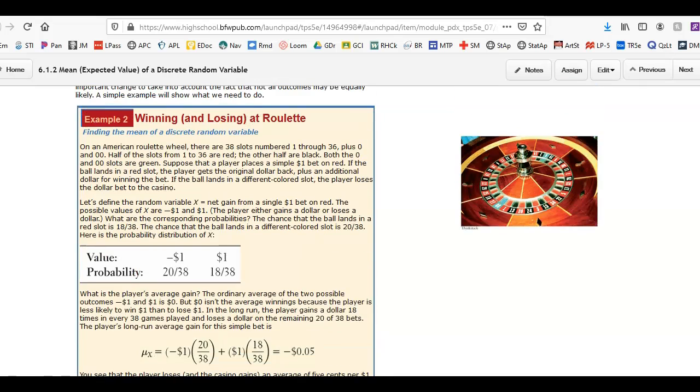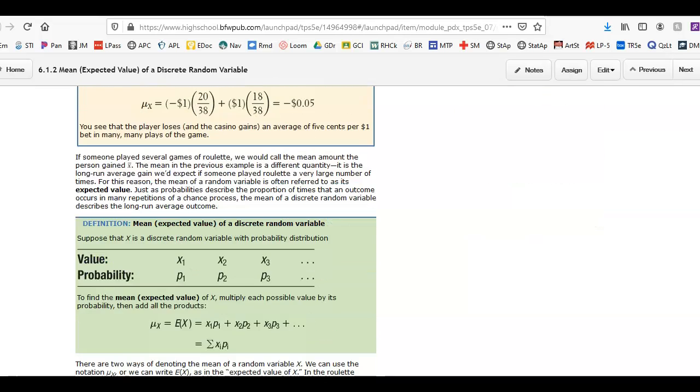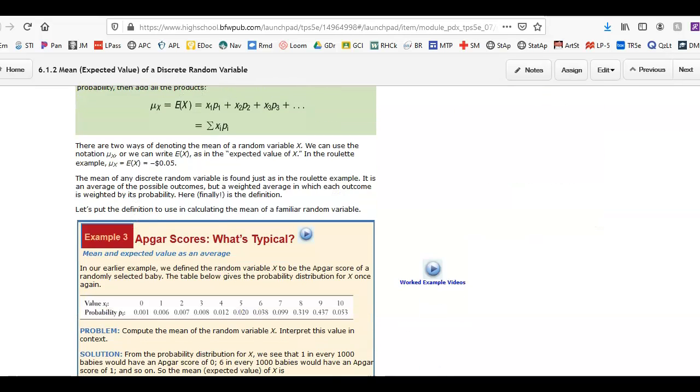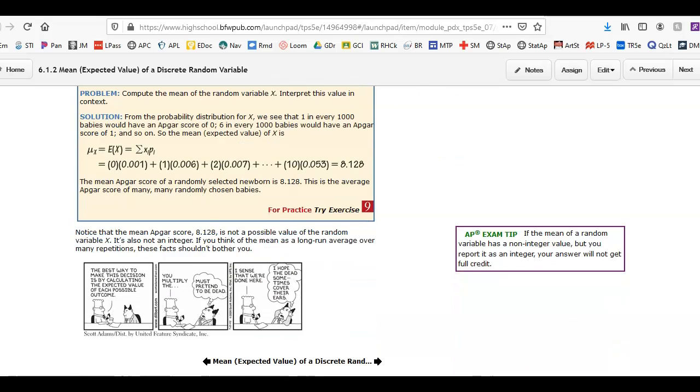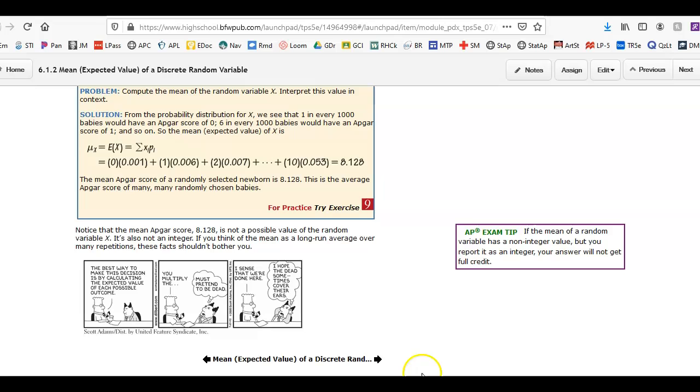And this is just an example of why every casino game is favored towards the house, and people lose money there in the long run. So this is just going back to the APGAR scores, same idea. It's pretty comprehensive as far as multiplying it out. But keep in mind, your value is typically going to be a non-integer value. It's not something that can actually occur. Baby can't receive an APGAR score of 8.128. But do not round your value.